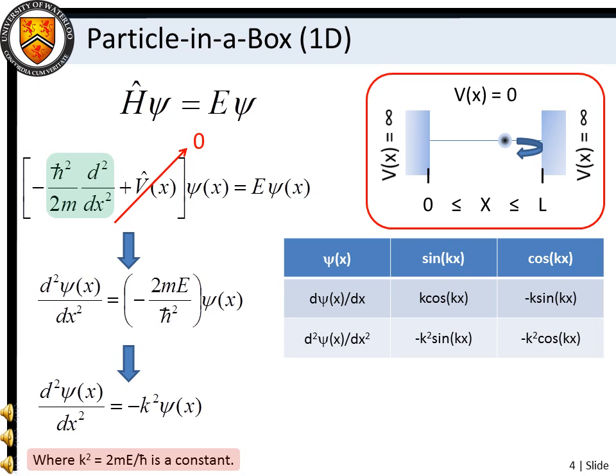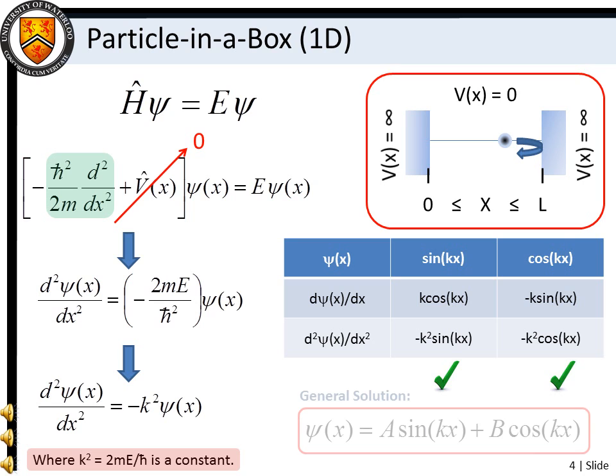For possible wave functions, we need look no further than sine kx or cos kx. Both of these functions are continuous and single-valued, and both satisfy the Schrödinger equation, since the second derivative of either returns minus k squared multiplied by the original function. In fact, we could propose a general solution that employs both the sine and cosine functions.